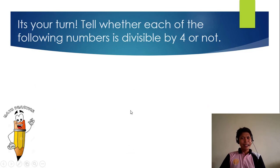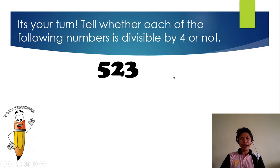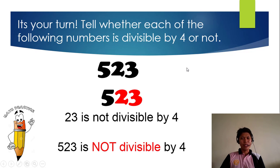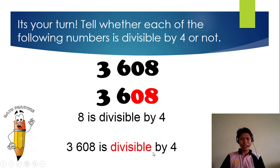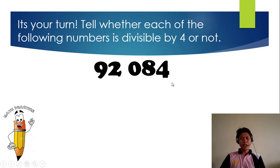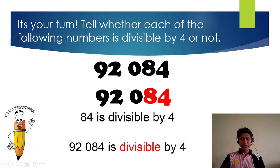Tell whether each of the following is divisible by 4 or not. I will give you a few seconds before I reveal the answer, or you can pause the video if you need more time. Start. 523: 23 is not divisible by 4, so it is not divisible by 4. Next, 3,608: 8 is divisible by 4, so 3,608 is divisible by 4. Next, 92,084: 84 is divisible by 4 — 8 divided by 4 is 2, and 4 divided by 4 is 1 — so 92,084 is divisible by 4.